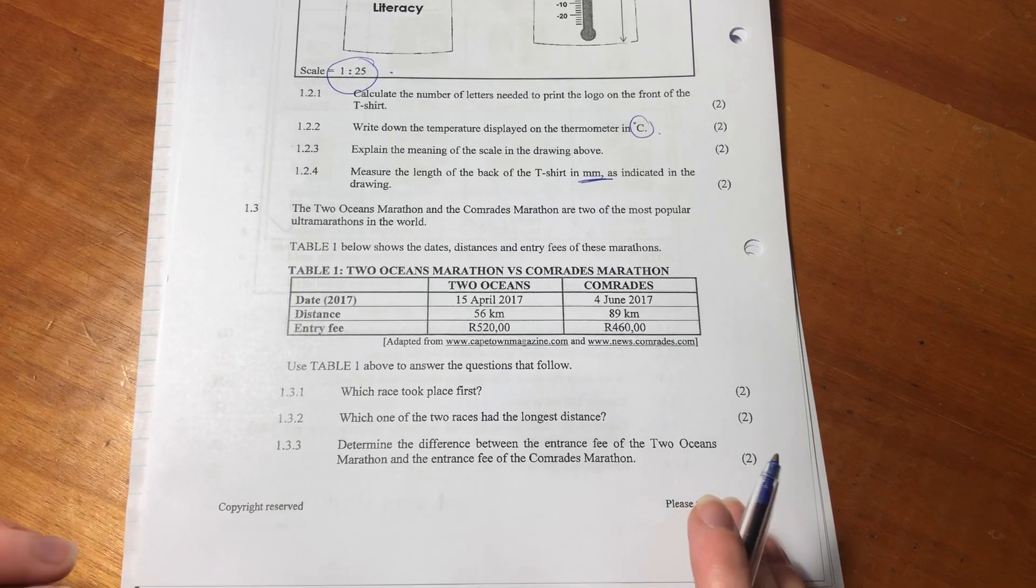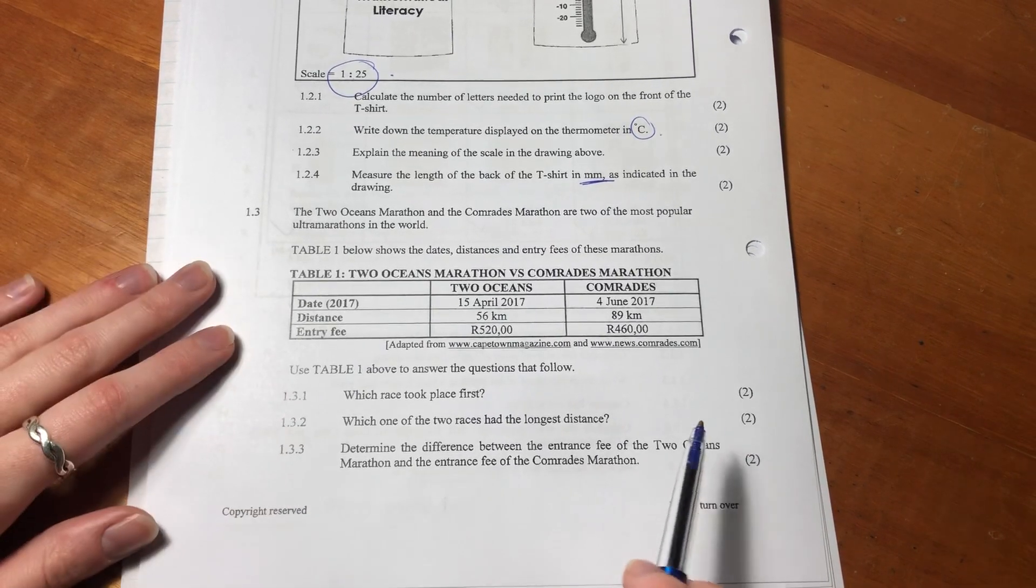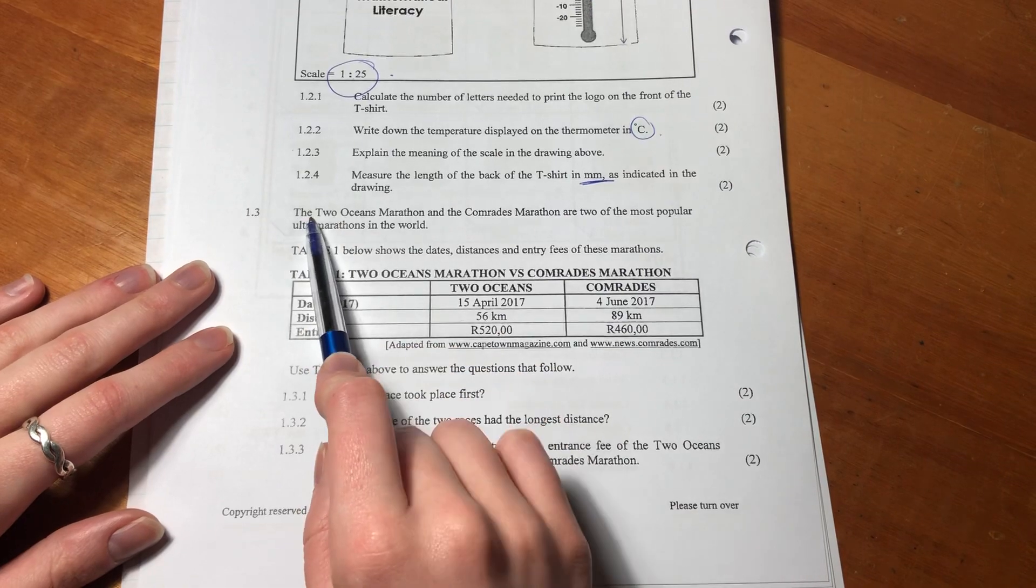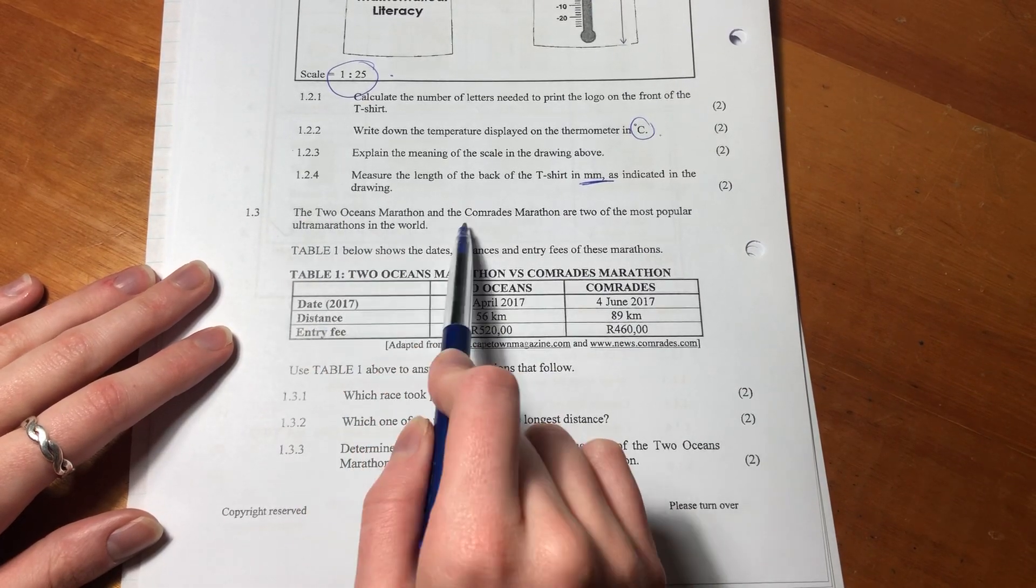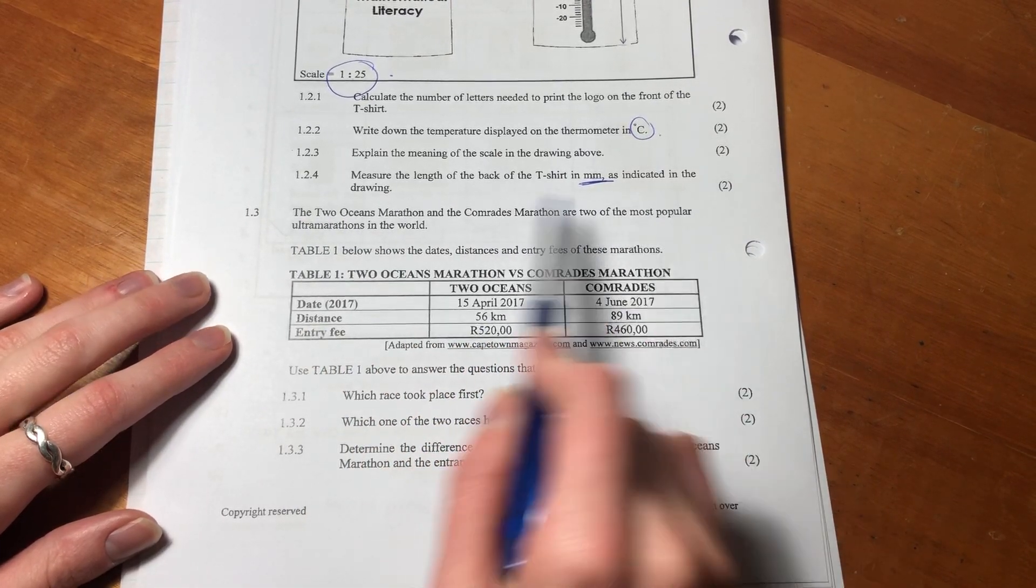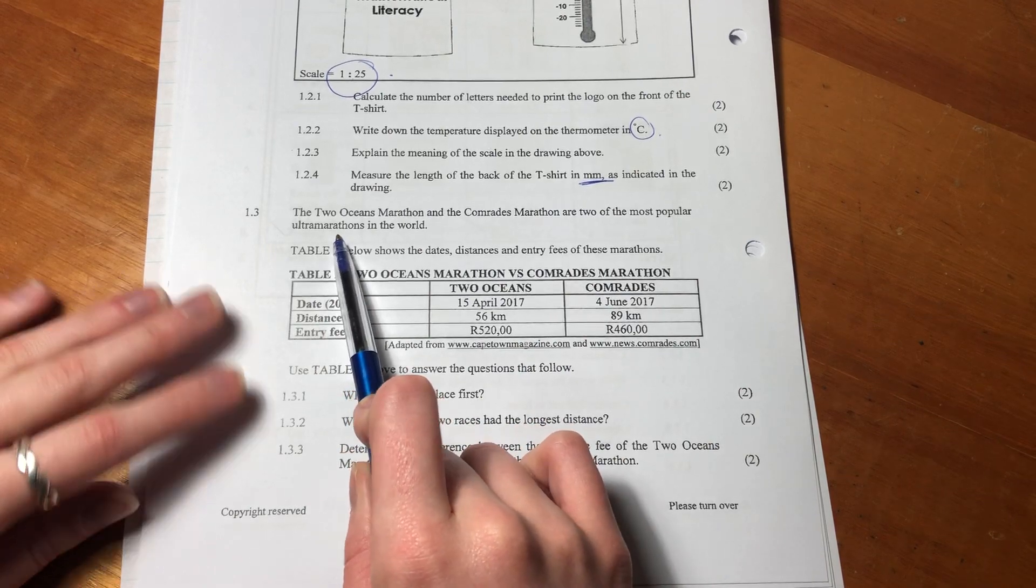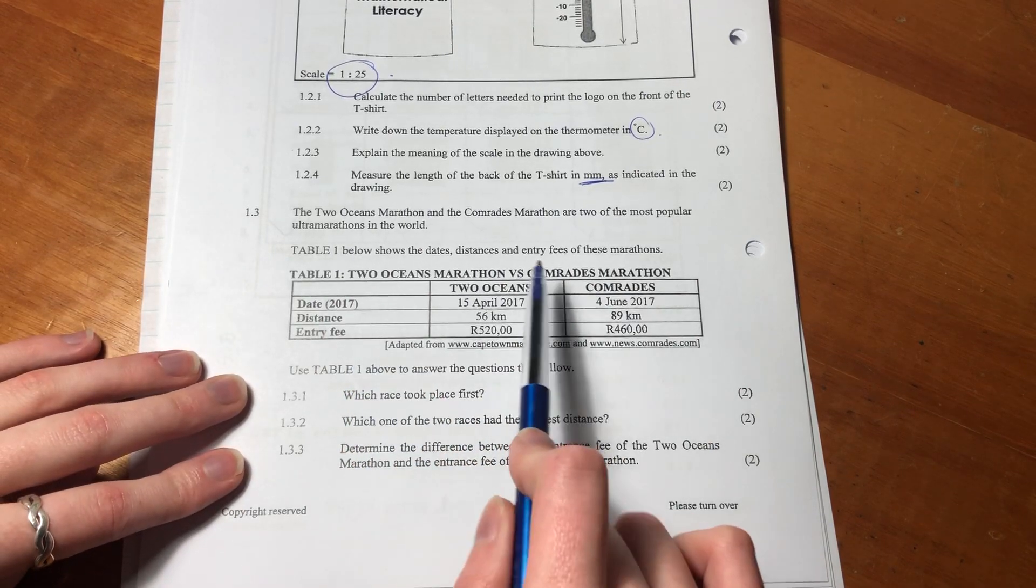Okay, we're moving on to 1.3. So let's read the scenario. It says the two oceans marathon and the comrades marathon are two of the most popular ultra marathons in the world. These are for those ultra fit people, I would die.